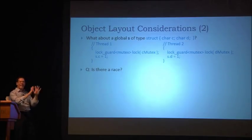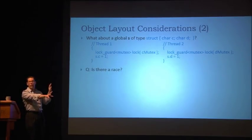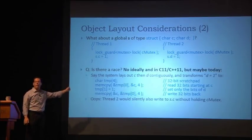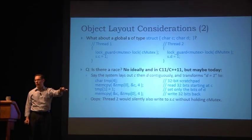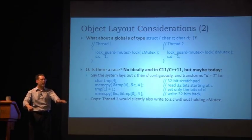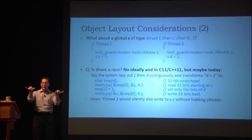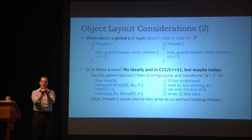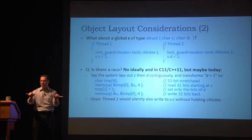Here's another example: the same situation, but C and D are put in the same struct. I protect each character with a different mutex. Is there a race? No. We guarantee that this is okay. You are perfectly allowed to reason that variables are independent, and it's up to you how you want to synchronize each variable. You can synchronize one using a mutex and another using atomics or a different mutex, and it doesn't matter if they're both characters that are adjacent.